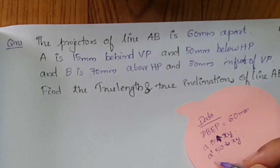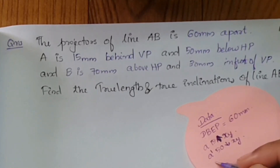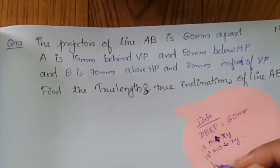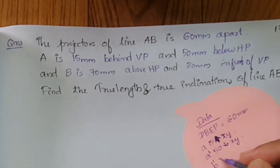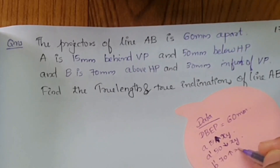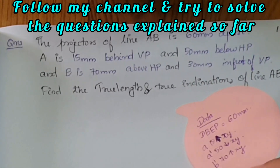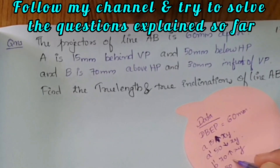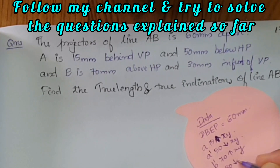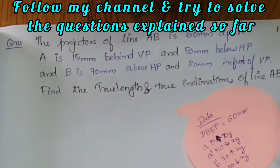Now for point B: B dash is above XY — B is 70 mm above HP, so B dash is 70 mm above XY. B is 30 mm in front of VP, so B' (top view) is 30 mm below the XY line.